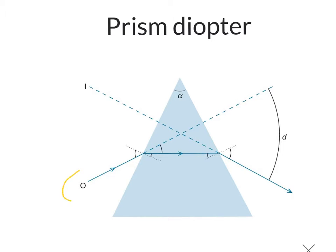So here's the object, and here's the image. The object will appear to move this way. A prism diopter measures this movement. The stronger the prism, the higher the prism diopter.